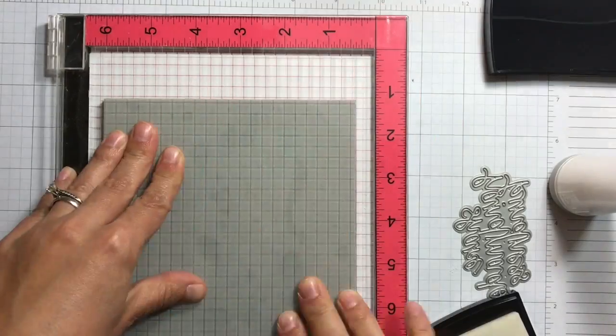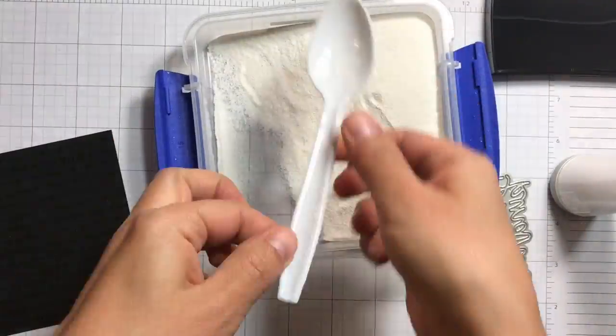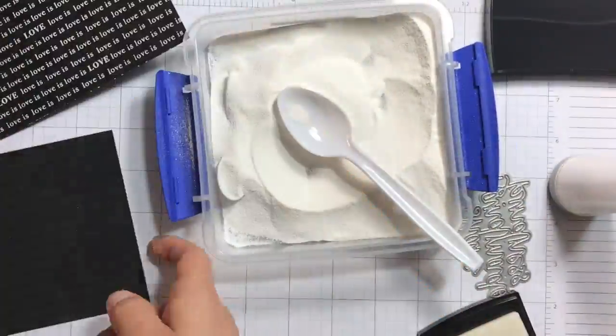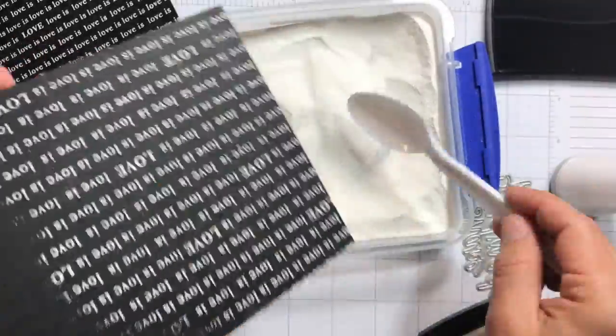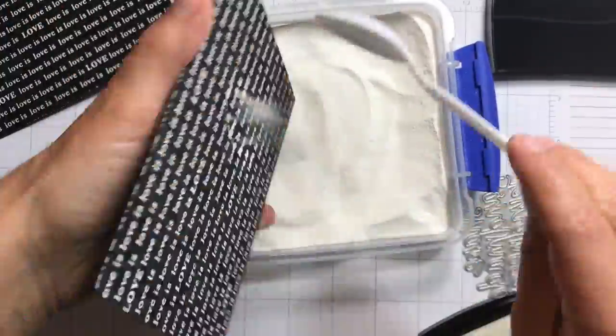I'm applying the embossing tool, the powder tool, so when I apply the white embossing powder I don't have a lot of speckles around my background. Now I'm applying the Hero Arts white embossing powder.